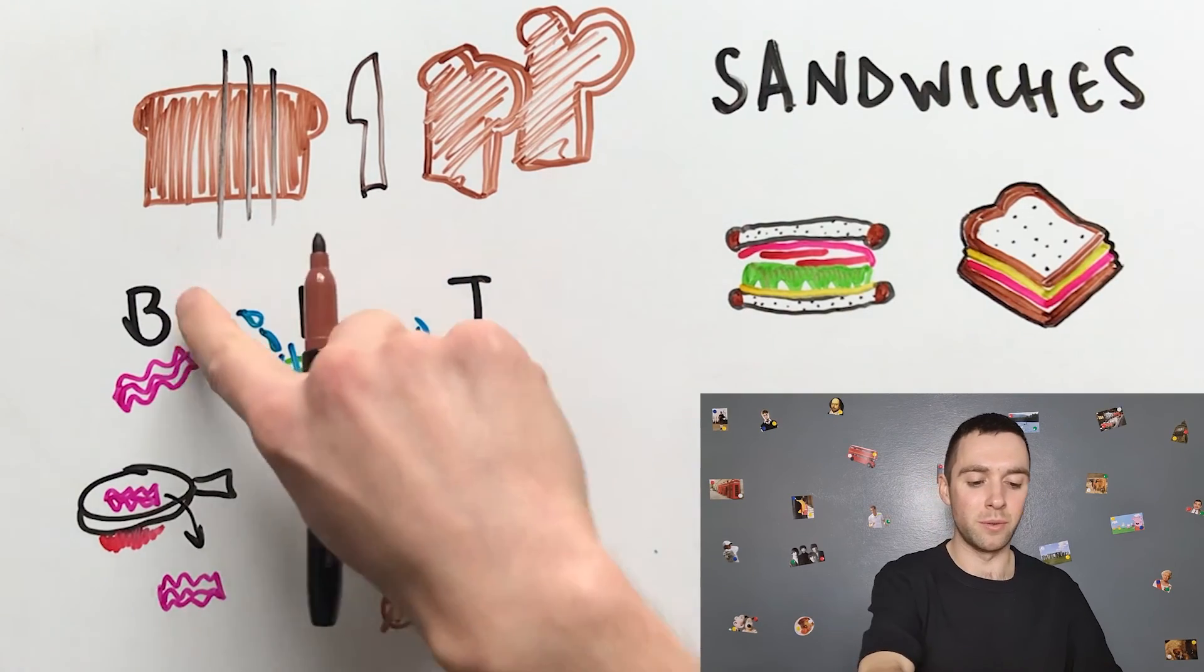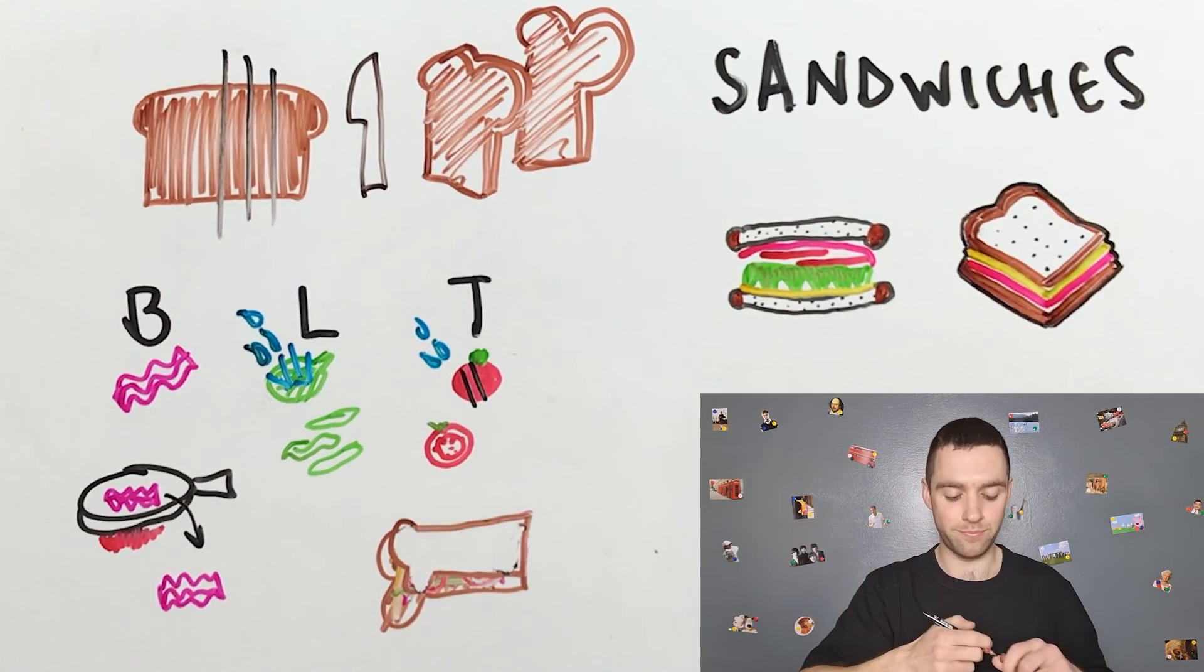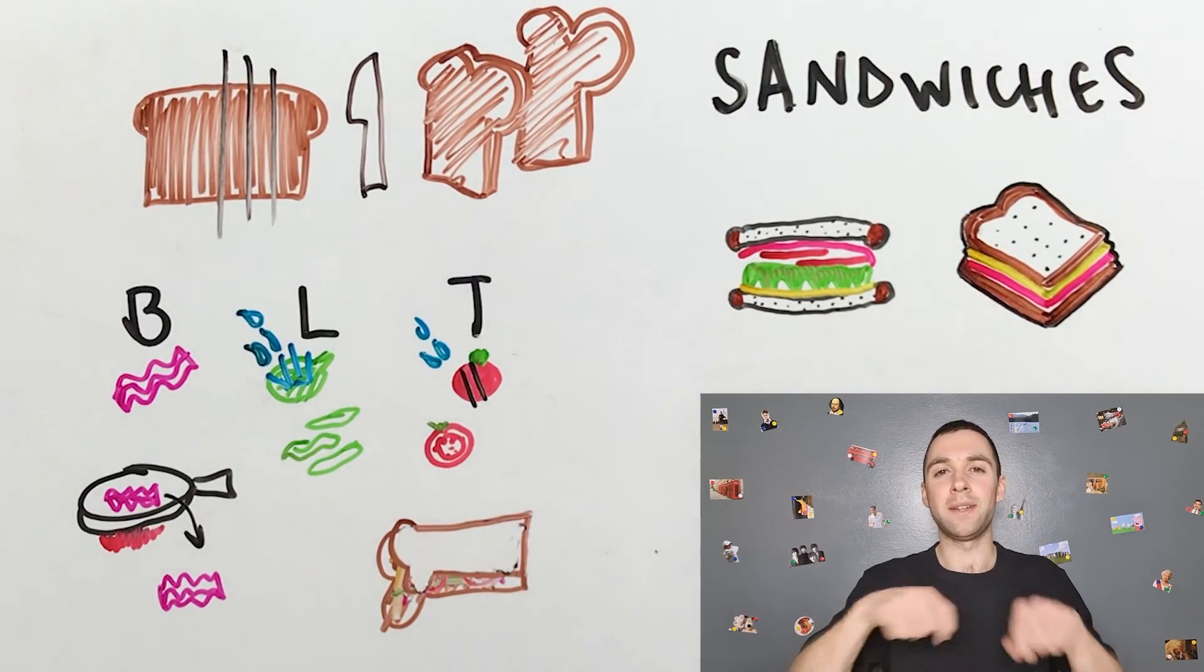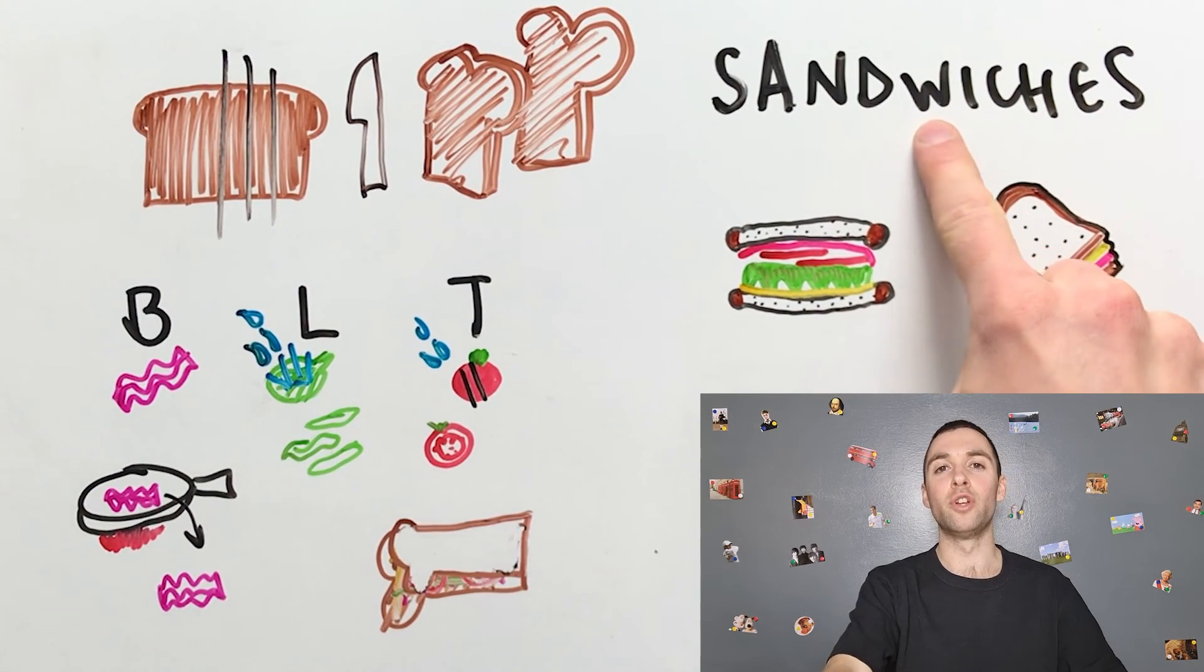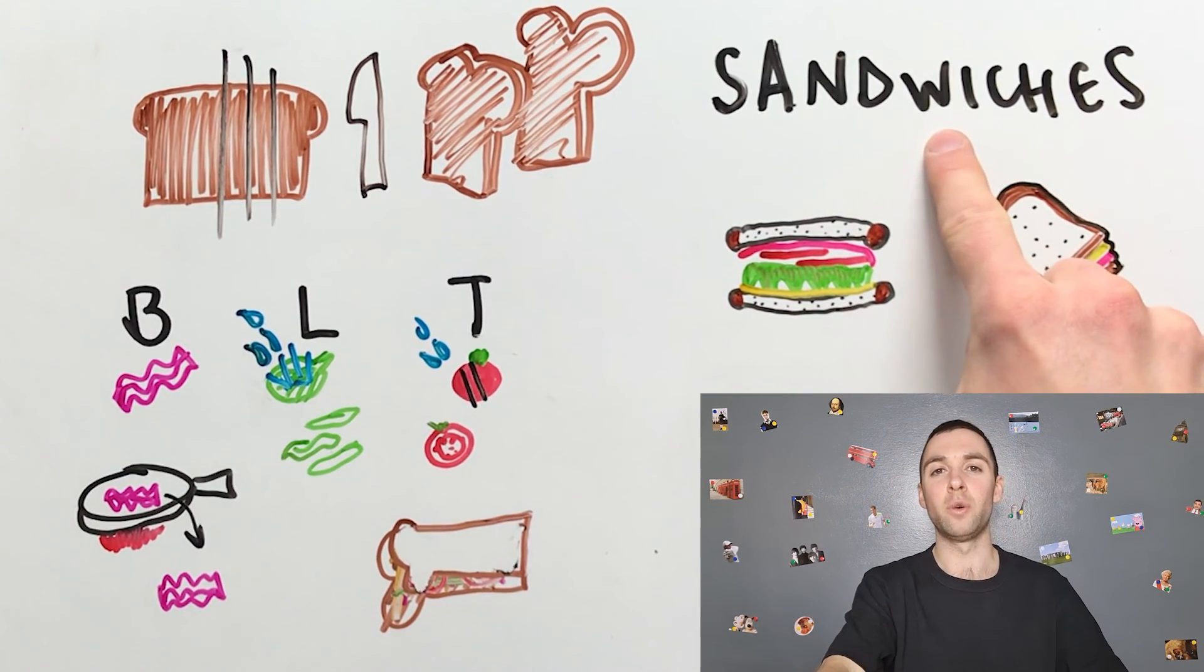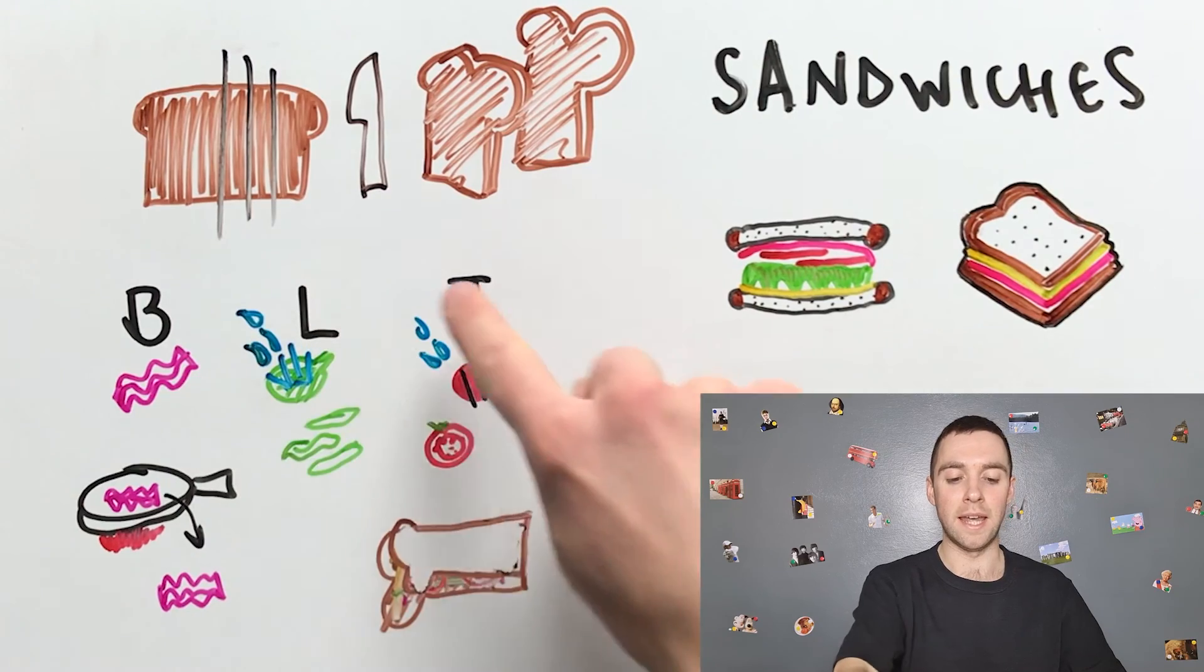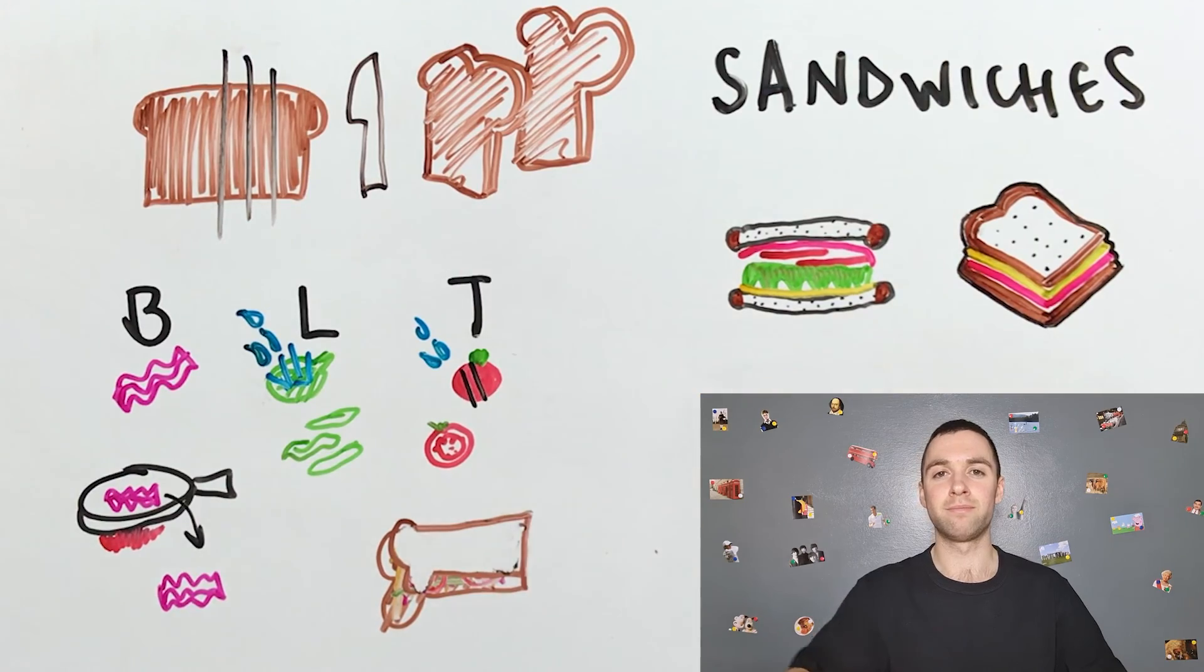There, my BLT sandwich is ready to eat. That is how I make two sandwiches. First sandwich was tuna mayonnaise, or tuna mayo, and the second sandwich was a BLT sandwich—bacon, lettuce, tomato sandwich. Thank you for watching and listening, and I will see you in the next video. Bye.